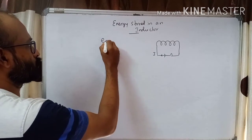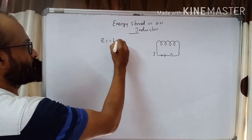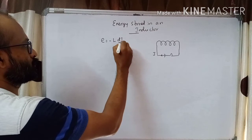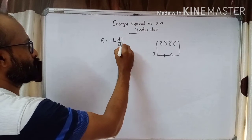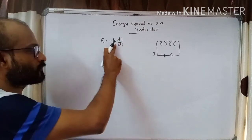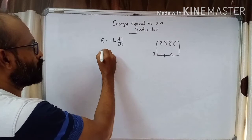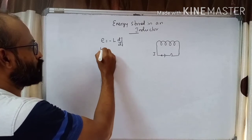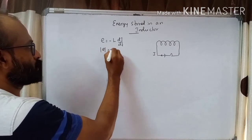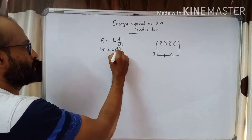First, let's find the EMF induced. We know the equation: E is equal to minus L times dI/dt. Here, dI/dt is the change in current and L is the inductance. Taking the magnitude, we can say E is equal to L times dI/dt.